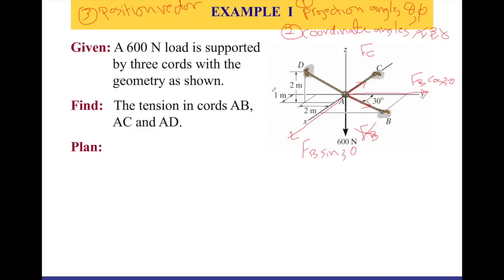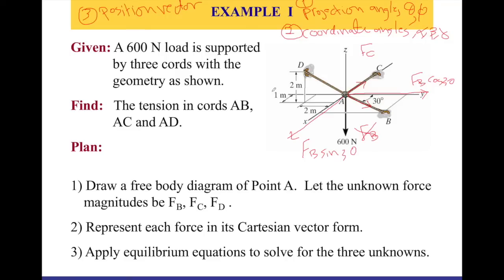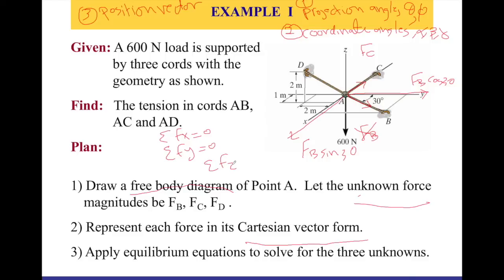Let's see the steps in sequence. First, you need to draw a free body diagram of point A and add the unknown forces FB, FC, and FD. Then we will represent each force in its Cartesian form — I, J, K. And then we apply the equations of equilibrium to solve for the three unknowns: summation of forces on the X-axis equals zero, summation of forces on the Y-axis equals zero, and summation of forces on the Z-axis equals zero.